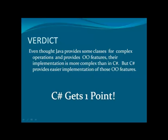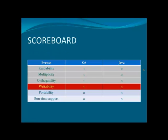Back in the verdict, let us see how the writability of these particular languages has proven itself. Even though Java provides some classes for complex operations and provides object-oriented features, the implementation is more complex than in C-Sharp. C-Sharp provides easy implementation of those object-oriented features. Putting the entire thing in a nutshell, the writability of these two languages is far more ahead in C-Sharp than in Java. So C-Sharp again scores a point, and is still in the lead.